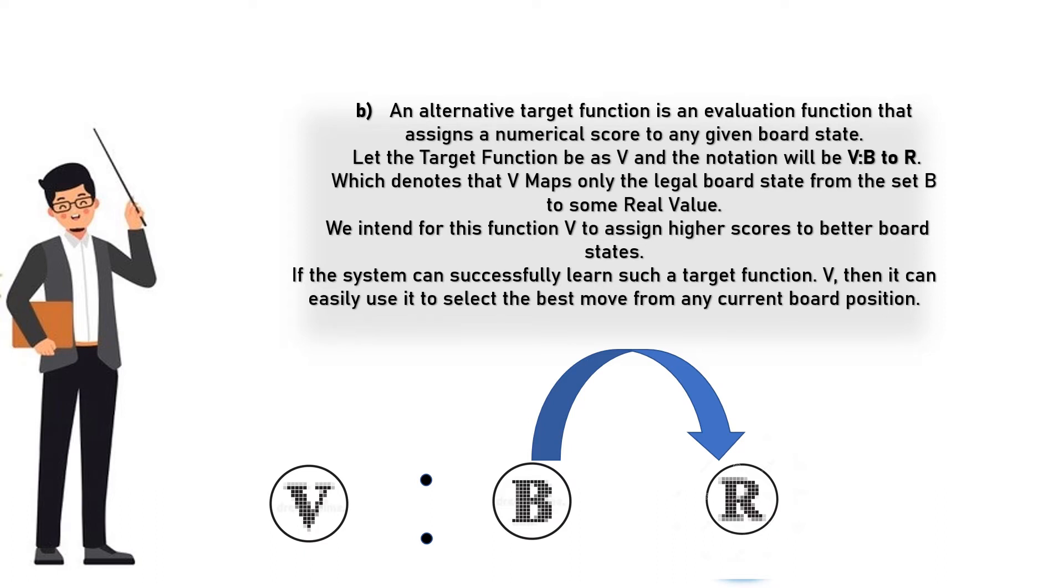We intend for this function V to assign higher scores to better board states. If the system can successfully learn such a target function V, then it can easily use it to select the best move from any current board position B. An alternative target function is an evaluation function that assigns a numerical score to any given board state.